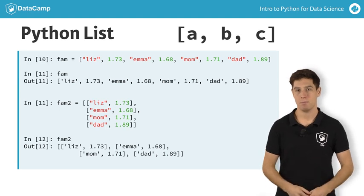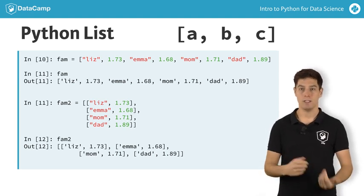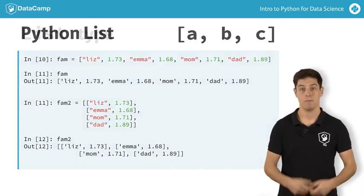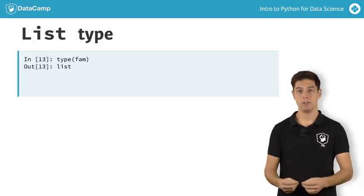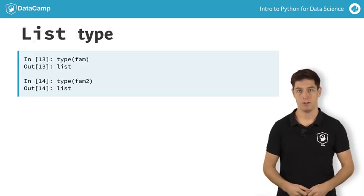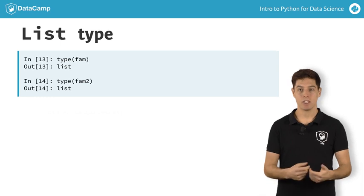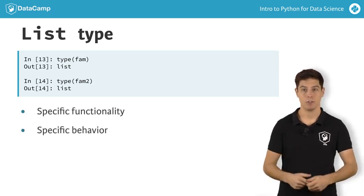We're dealing with a new Python type here, next to the strings, booleans, integers, and floats you already know about: the list. These calls show that both fam and fam2 are lists. Remember that I told you that each type has specific functionality and behavior associated?